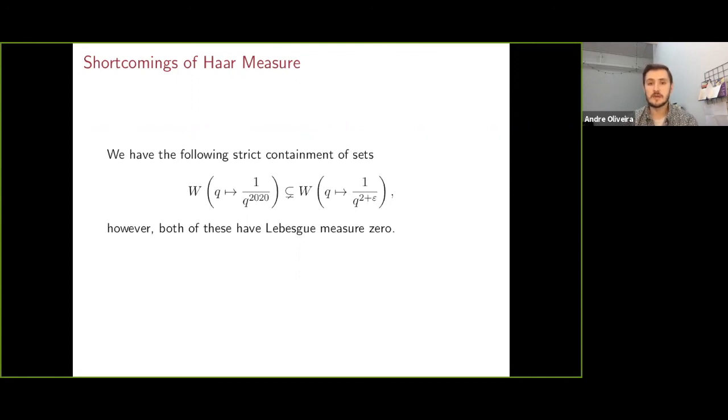However, by Khinchin's theorem, both of these have Lebesgue measure 0, and so it's not good enough to distinguish these two sets.